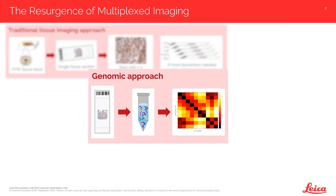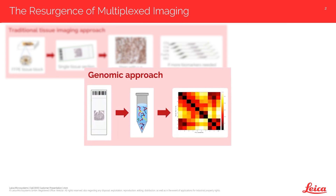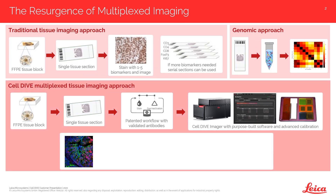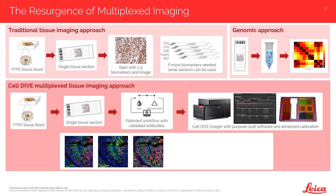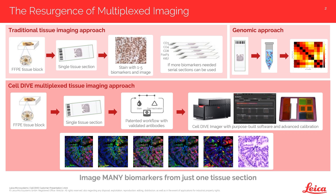Alternatively, genomic approaches such as RNA-seq can deliver expression information on a lot of biomarkers at once, but much of the spatial information is lost. So Cell Dive is an end-to-end solution that can visualize up to 60-plus biomarkers using an iterative staining process to deliver high-resolution spatial information on many more markers than traditional imaging could achieve.